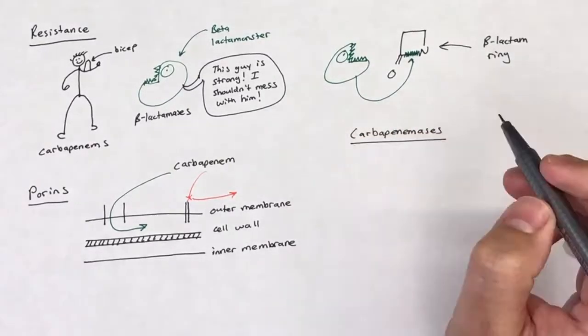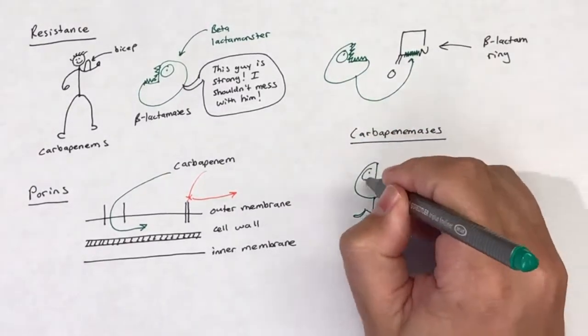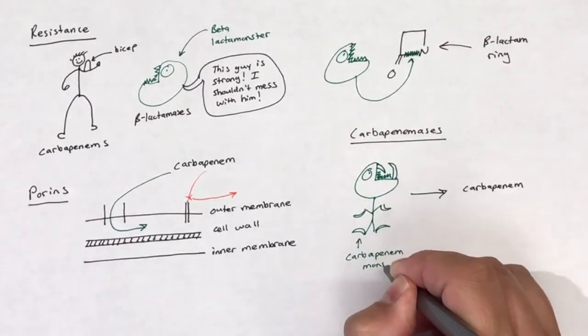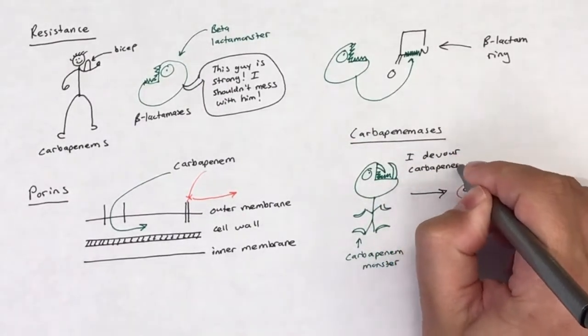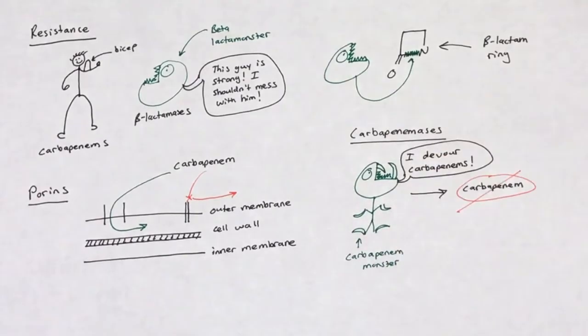Another mechanism of resistance is the upregulation of enzymes that can degrade the carbapenems. These so-called carbapenemases degrade the structure of carbapenem, rendering it inactive.